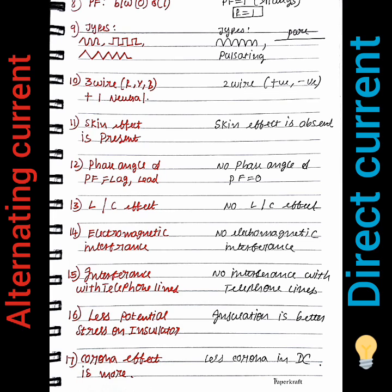There is a power factor in AC but not in DC. For DC, the relationship is V = IR. For AC, it is V = IZ, where Z is the impedance combining R, L, and C.